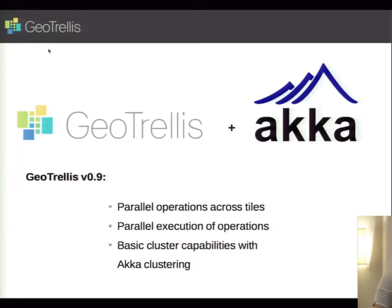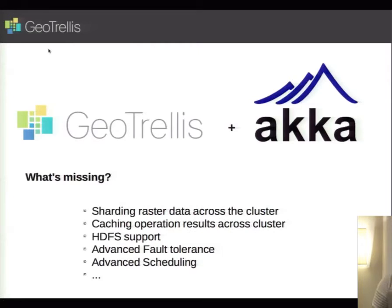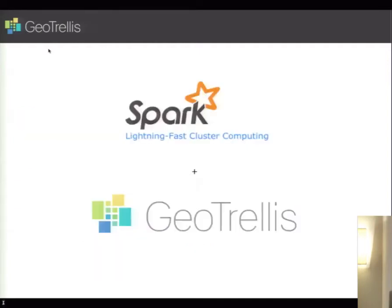GeoTrellis has cluster capabilities with Akka clustering, allowing 10-node clusters for fast computation. But it's missing a number of features, such as sharding raster data across the cluster, using HDFS, caching operation results for iterative algorithms, advanced fault tolerance, and advanced scheduling — which sounds like a laundry list of Spark features. So we came to the conclusion that if we could use the core algorithms and core data types of GeoTrellis and put that on Spark, that would be the sweet spot.